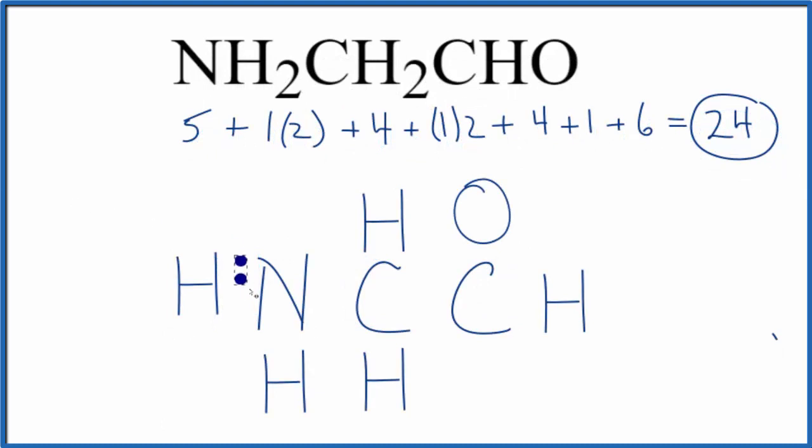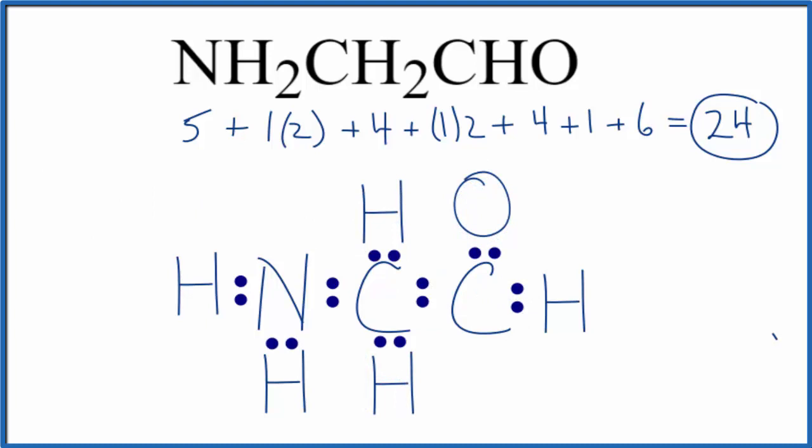So we have 24 valence electrons. We'll form bonds between atoms, so everything between atoms gets a pair of electrons and that'll form the chemical bond. Then we'll complete the octets on the oxygen. We've used 22, we only have two more.